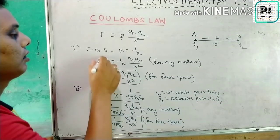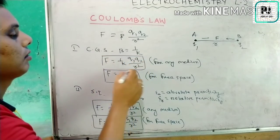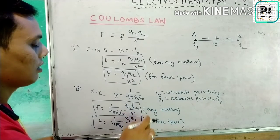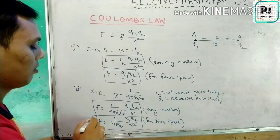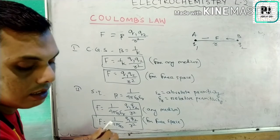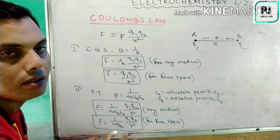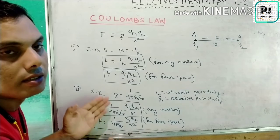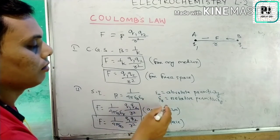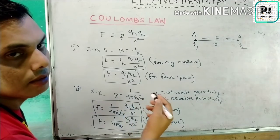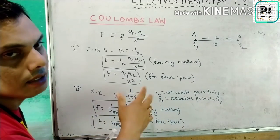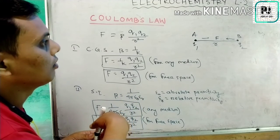In CGS one value is for any medium and another for free space; similarly in SI. We mainly use this law for free space. This covers the fundamental ideas about Coulomb's Law: the statement, the mathematical derivation, the value of permittivity, epsilon-zero, epsilon-r, and formulas for any medium or free space.